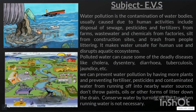Water pollution is contamination of water bodies, usually caused due to human activities, including disposal of sewage, pesticides and fertilizers from farms, waste water and chemicals from factories, silt from construction sites and trash from people littering.